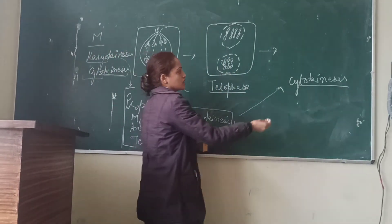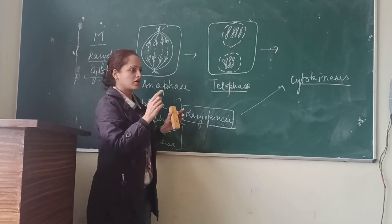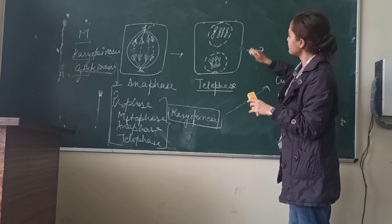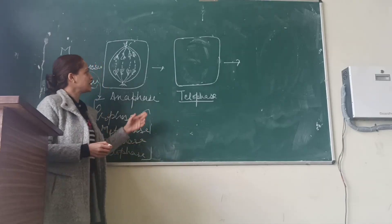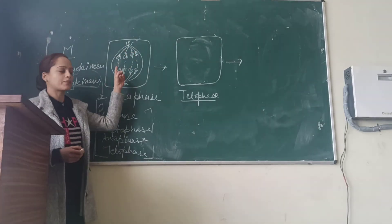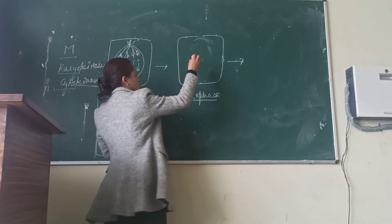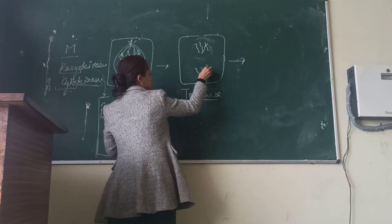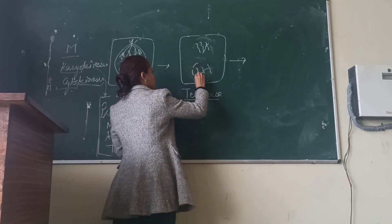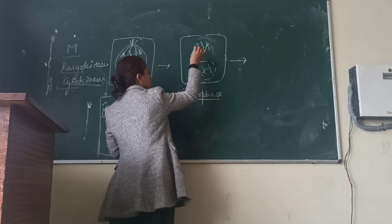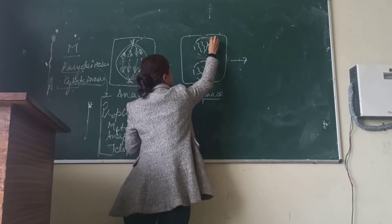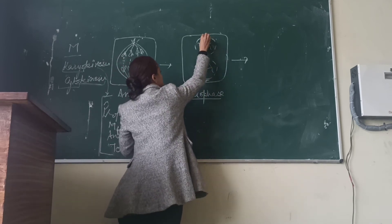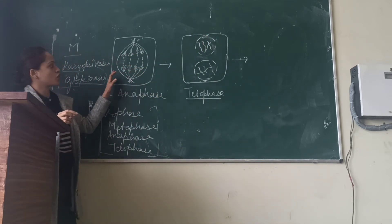In cytokinesis, the division of the cytoplasm takes place. In an animal cell, an invagination forms in the plasma membrane. In telophase, the chromosomes reach the opposite poles and get decondensed, appearing again as fine threads, and the nuclear membrane reappears in both daughter cytoplasms. All spindle fibers completely disappear.